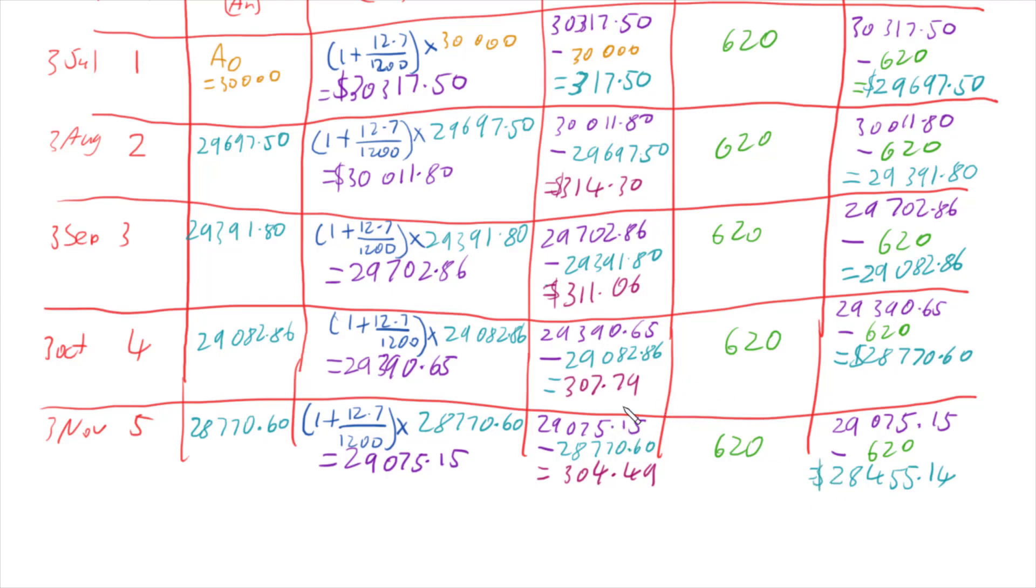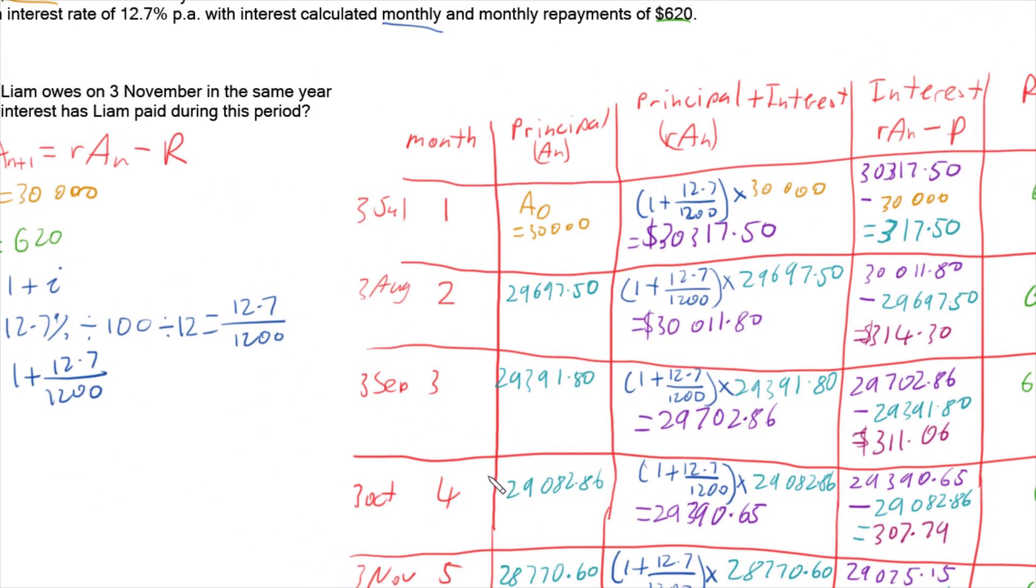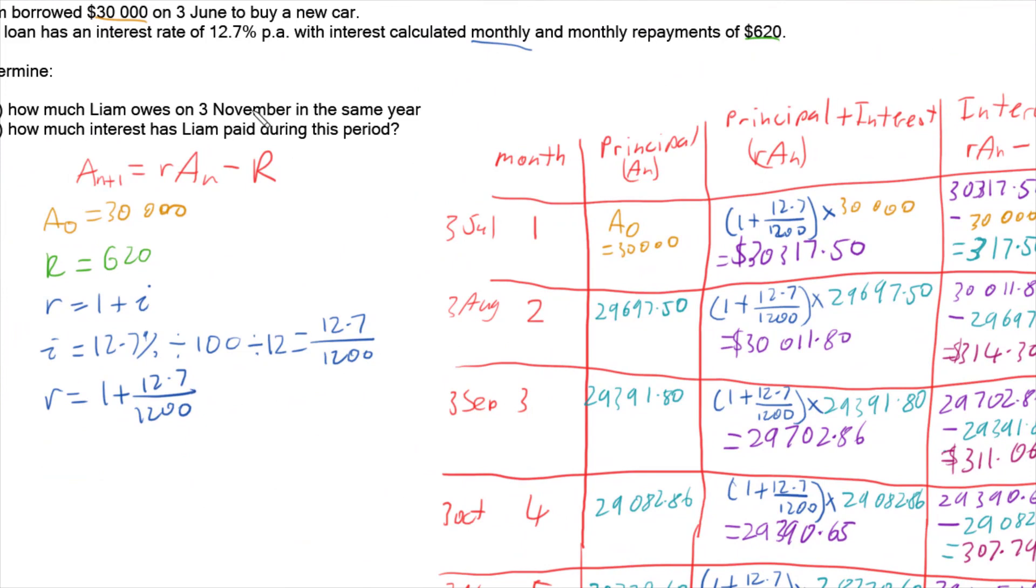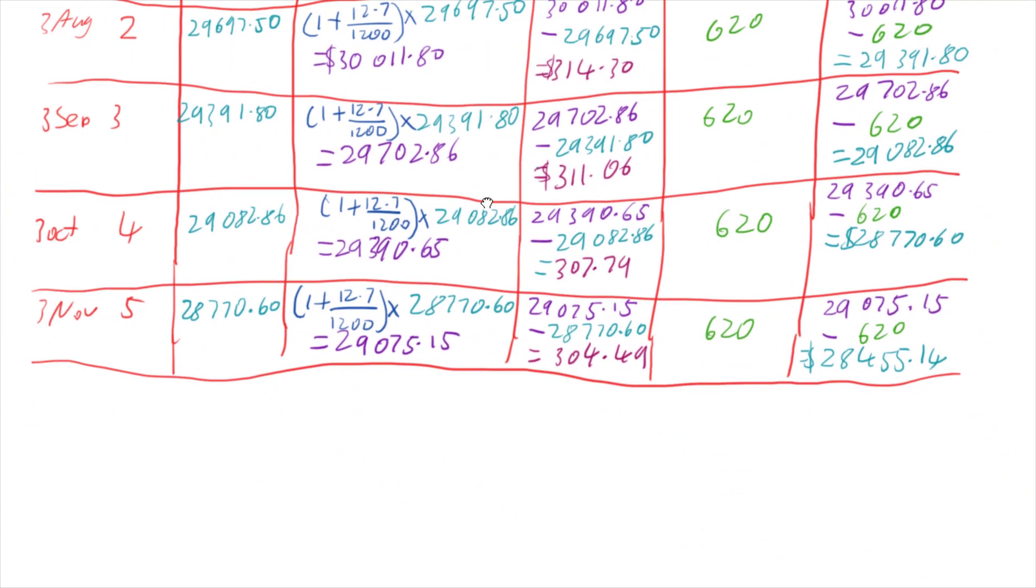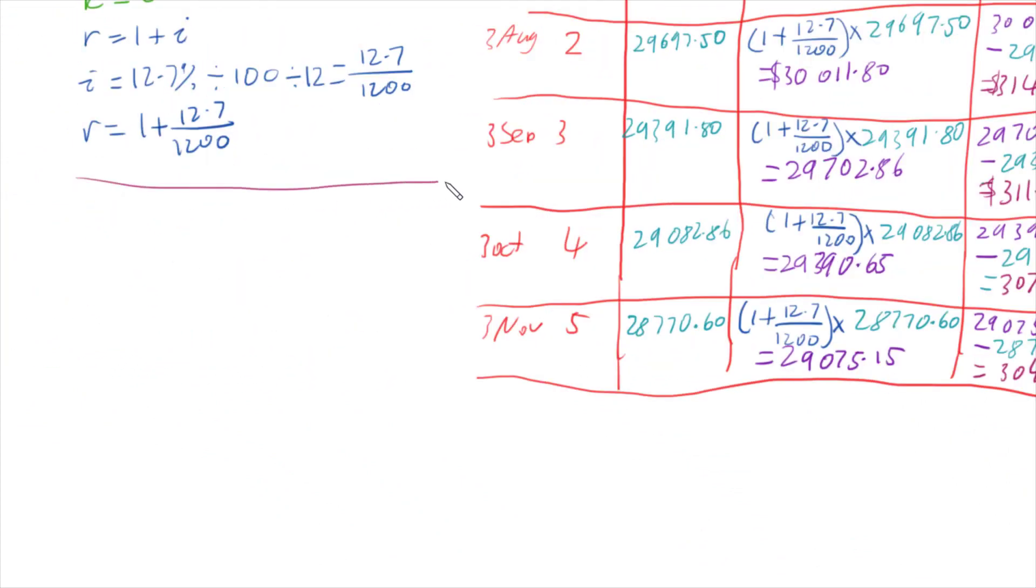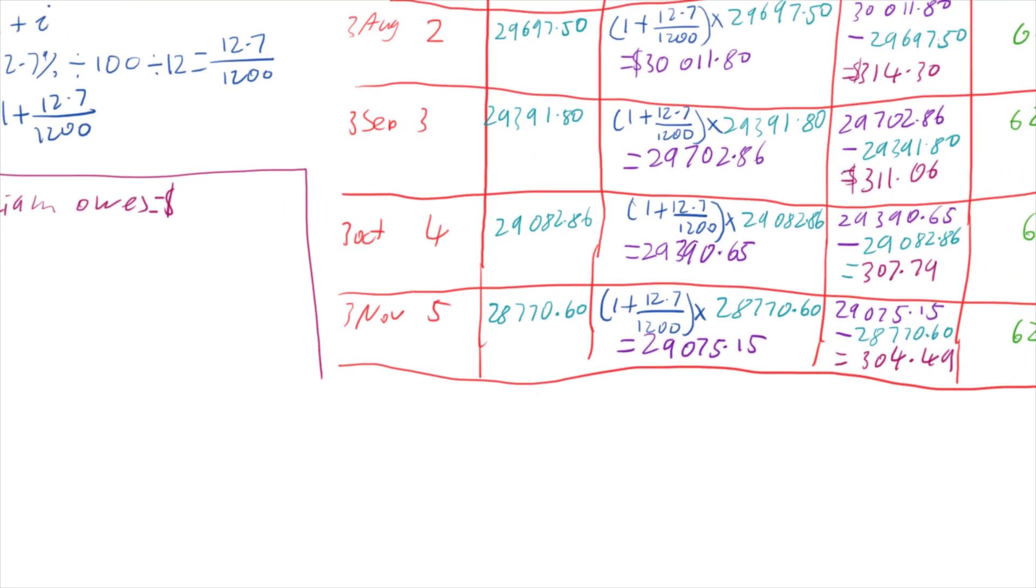So now that we've done all of these calculations and we have our completed table, we can actually answer what the question's asking us for. So the first part, part A, asked us how much does Liam owe on the 3rd of November? We worked that out at the end of our table. So the answer to part A is that on the 3rd of November, he still has $28,455.14.